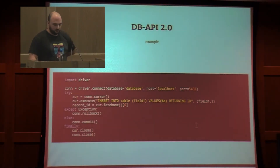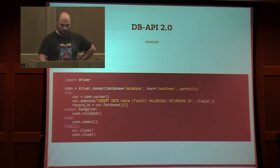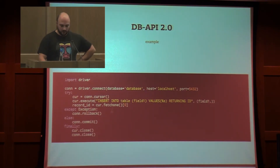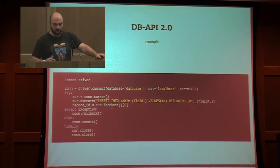Here is a small example with a hypothetical driver. This driver provides a connect function with several parameters. We create a new cursor, execute a statement, and get the result with fetchone. If there is an exception, we make a rollback. If there is no problem, just a simple commit. And of course we close the cursor and the connection.